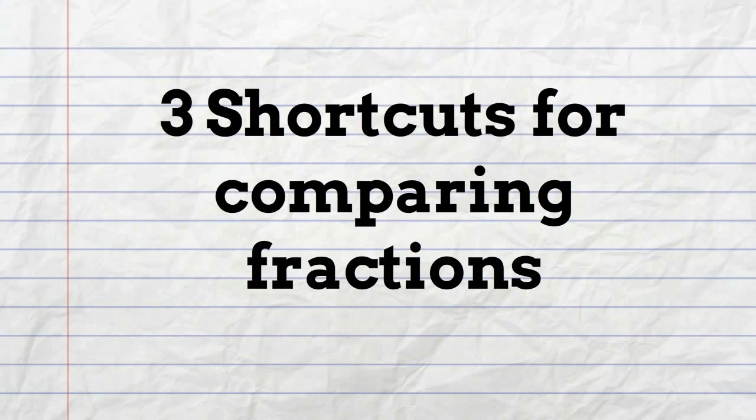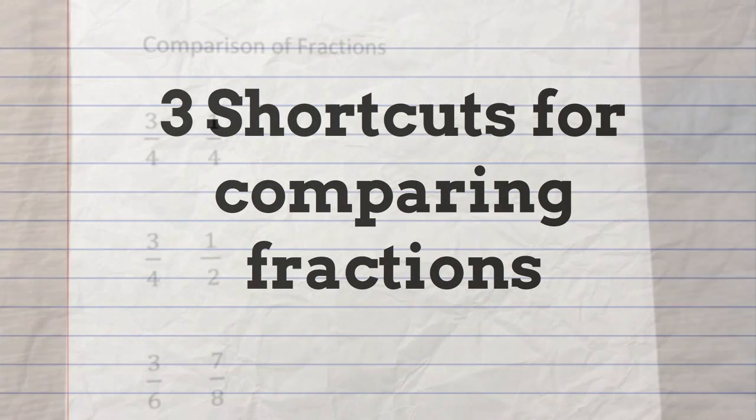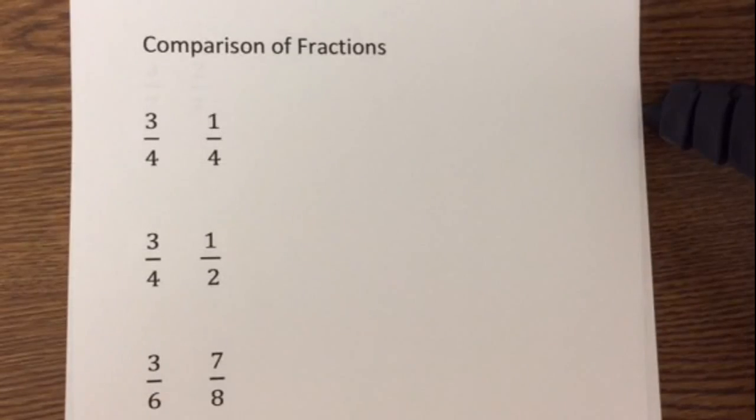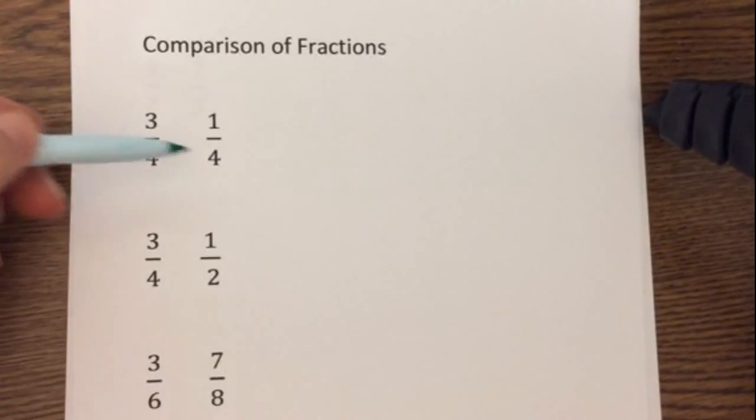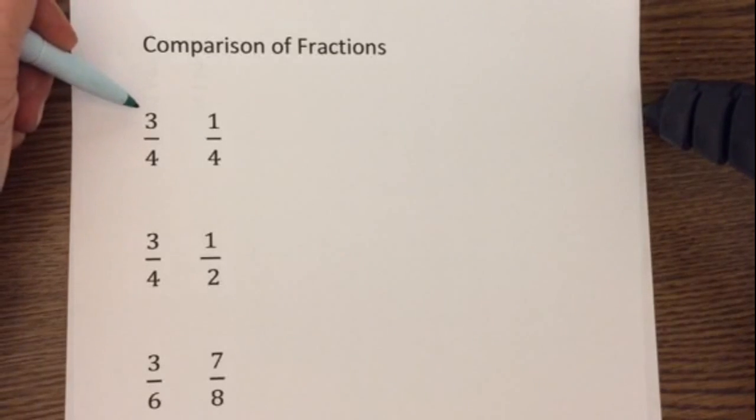Let's look at some examples of comparing fractions and apply these three shortcuts. In this first example you'll notice the denominators are the same, so I know the fraction with the largest numerator 3 is greater than 1 is the largest fraction, so I could write 3 fourths is greater than 1 fourth.